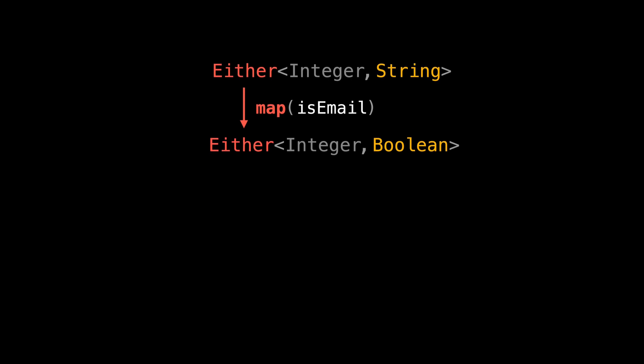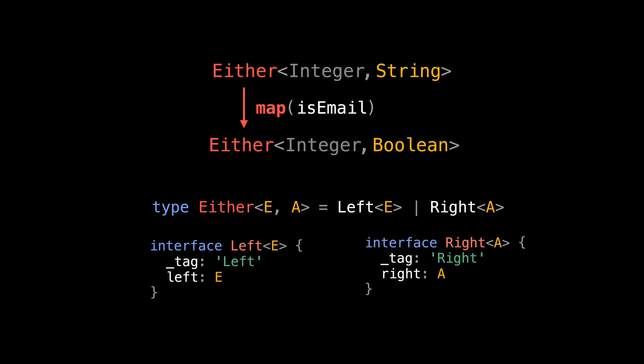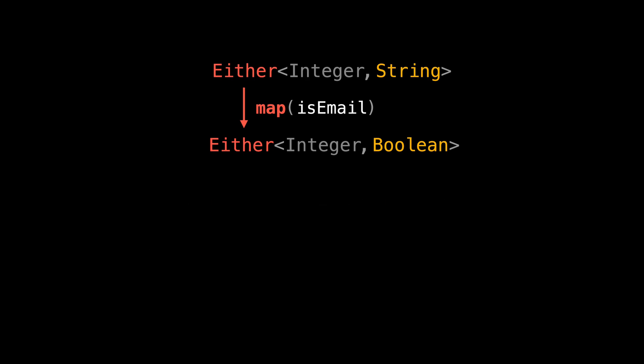Let's take a look at the definition of either. As we know either is a union of left and right structures. Looking at the definition of left and right they seem to be pretty symmetrical. Both simply wrap a single type in the same manner regardless of what we named them. That means when it comes to defining map function for either, there shouldn't be any difference between the order of type parameters.